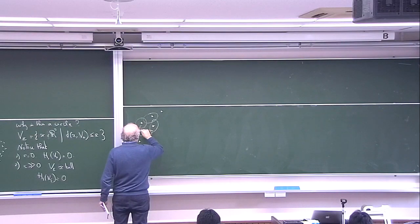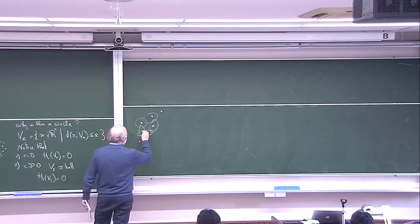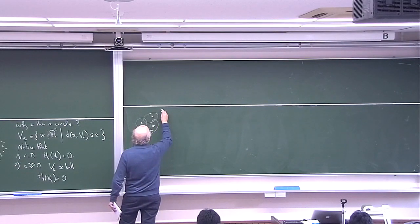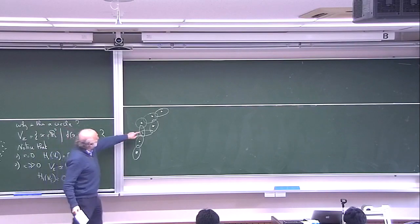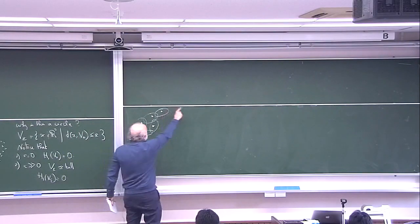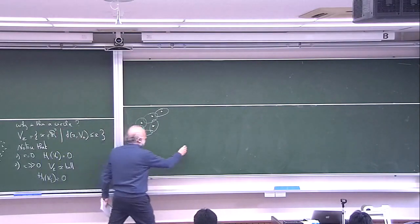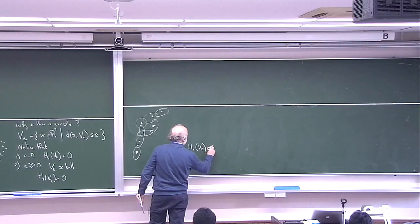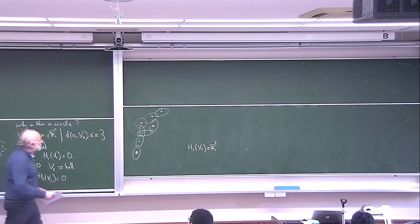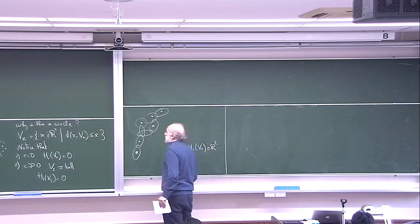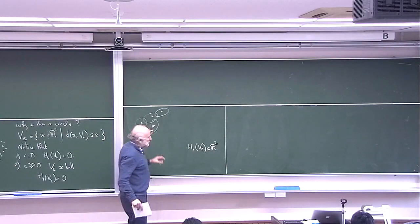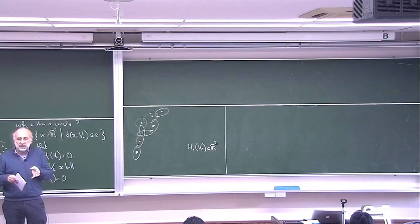That's even not so clear because, locally, V_epsilon is the union of all these balls, and you can get something in H1. For example, H1 of V_epsilon could have dimension two, but you don't have the impression of having two circles — you only have one circle. What happens is that you have some spurious H1 that appears, but as you increase epsilon this H1 will disappear quite quickly.